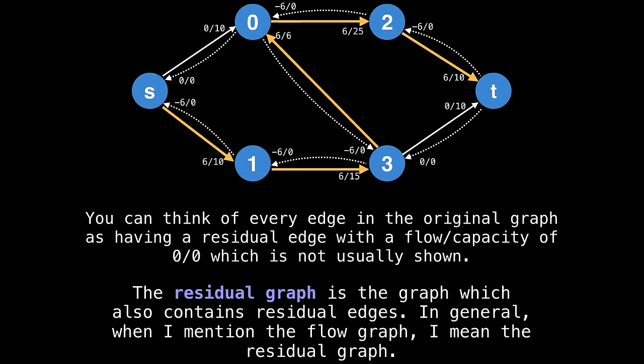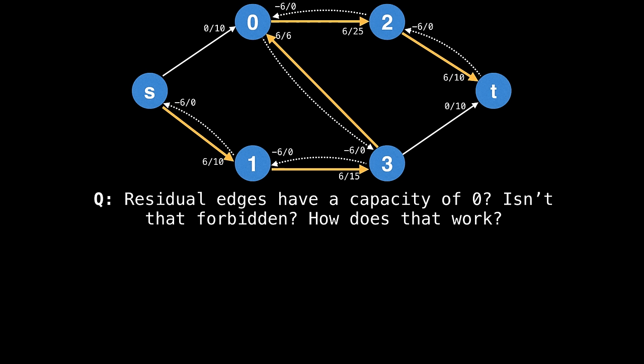Now that we know what residual edges are, the term residual graph simply means the graph which also contains residual edges, not just the original edges given in the flow graph. So generally speaking, when I mention the flow graph, I usually mean the residual graph.